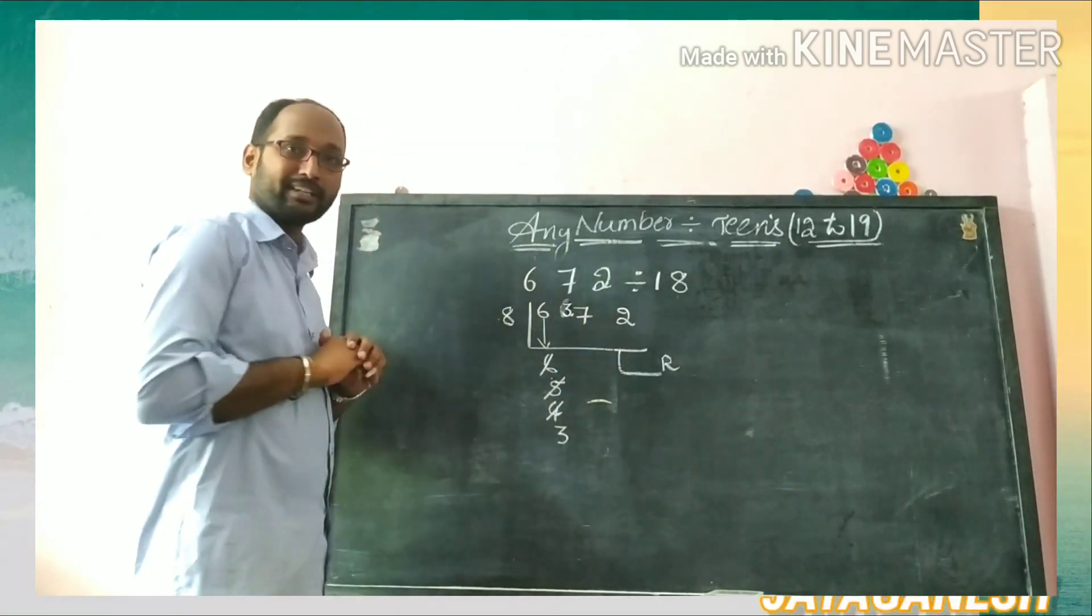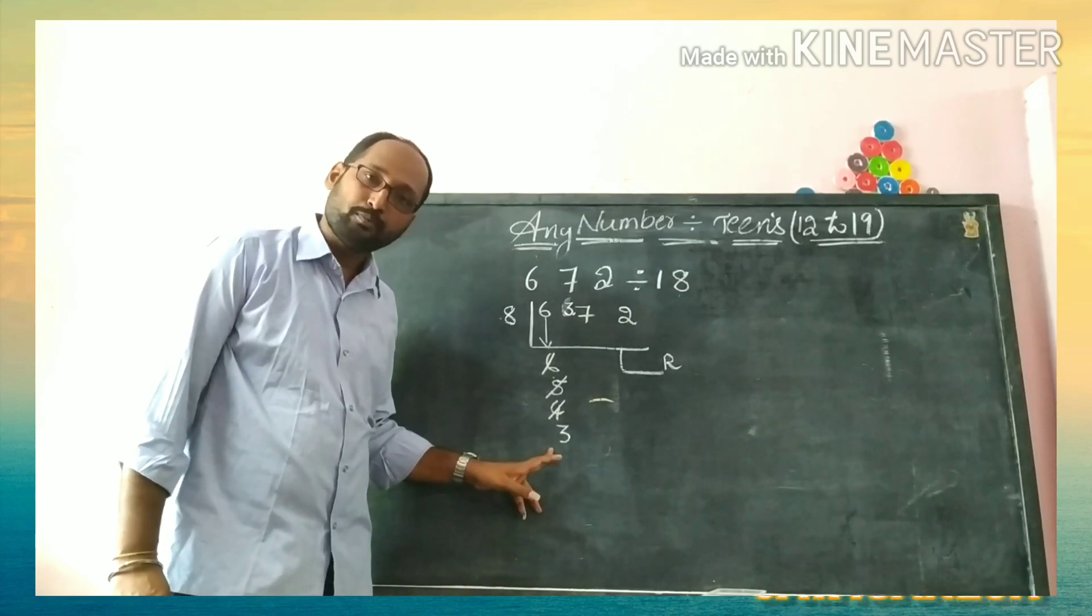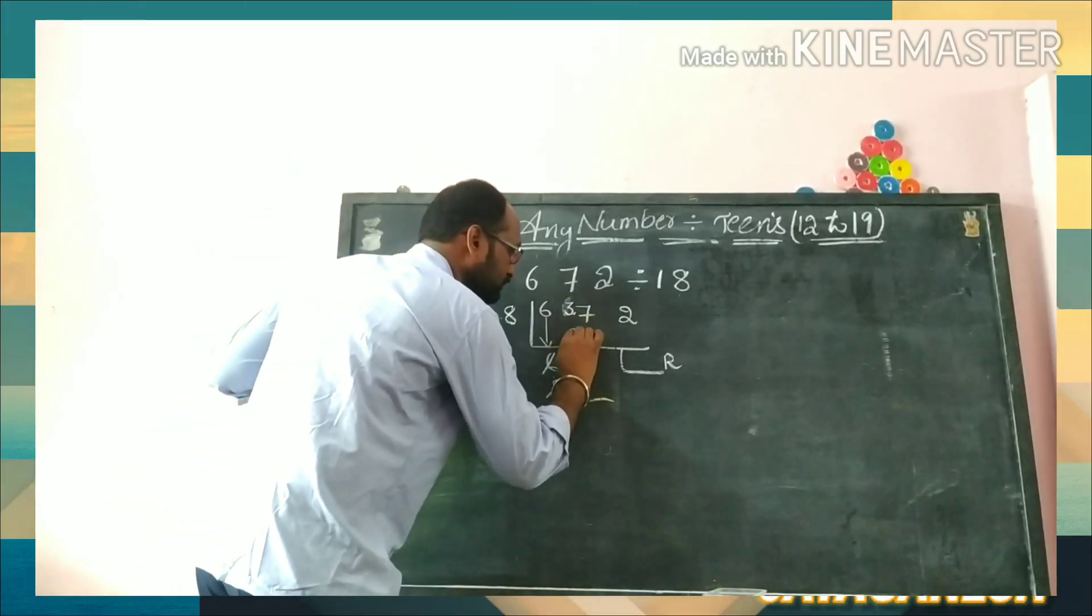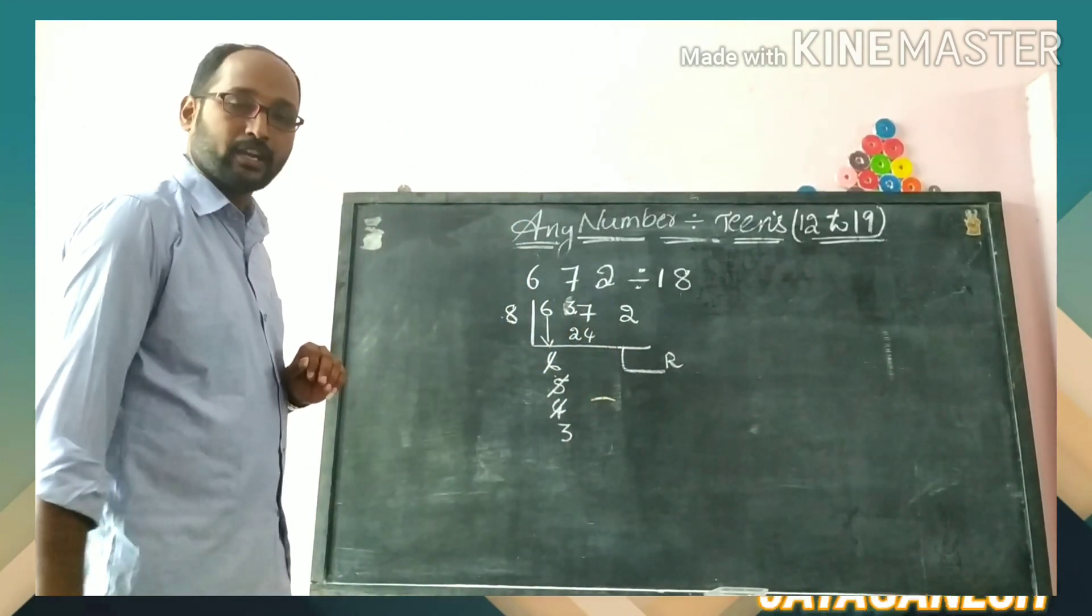Now it will be 37. Check it: 8×3 is 24, it is possible. Now you do the subtraction. 3 minus 2 will be 1, and 7 minus 4 will be 3.